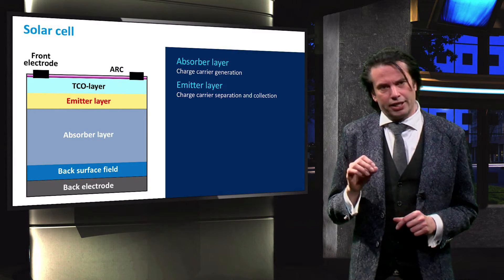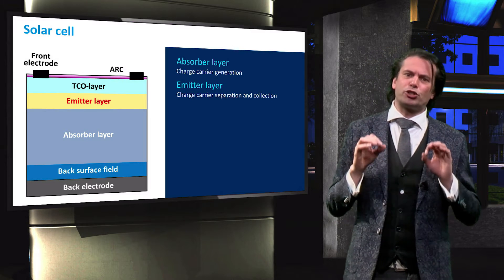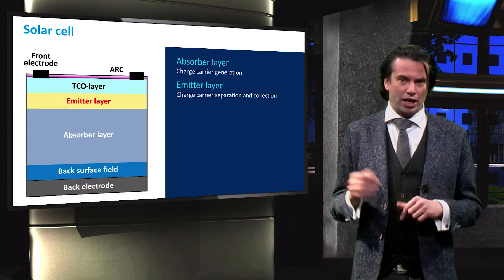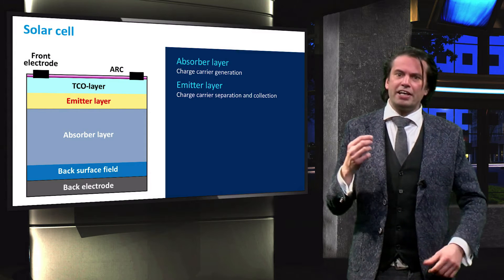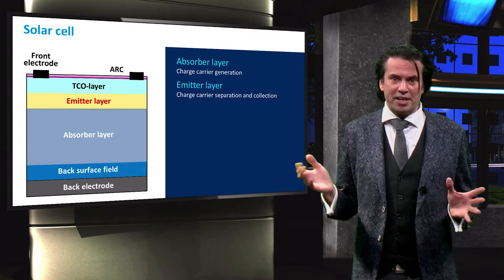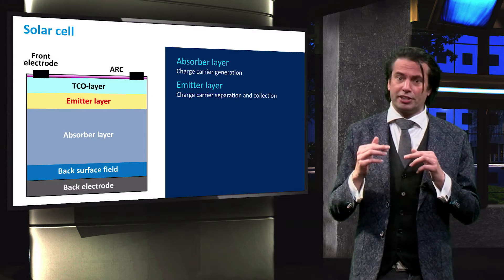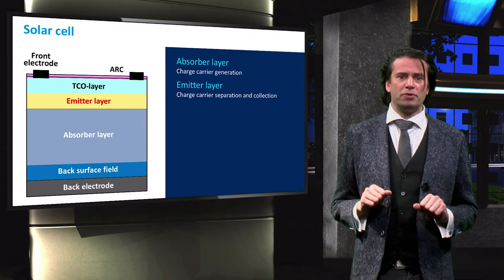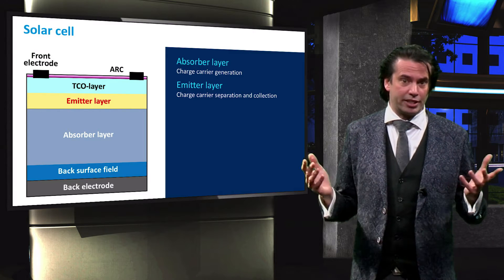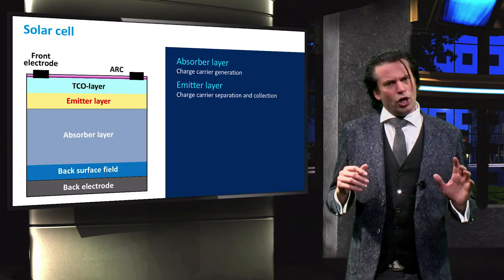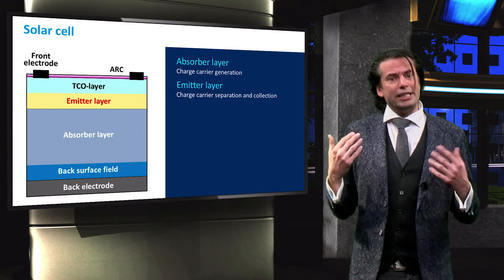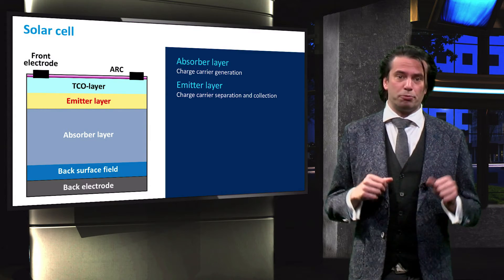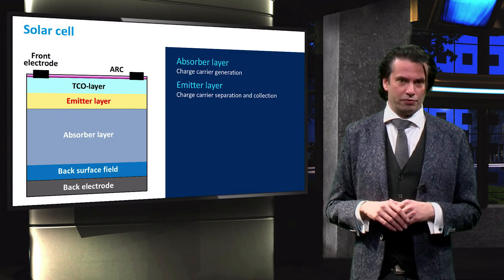Next is the emitter layer. The emitter layer is crucial for charge carrier separation and collection. It functions as a selective membrane that allows minority charge carriers — in this case electrons — to move through, but resists the movement of majority carriers, in this case holes. Without the emitter layer, generated charge carriers would simply move around in the absorber layer until they recombine.